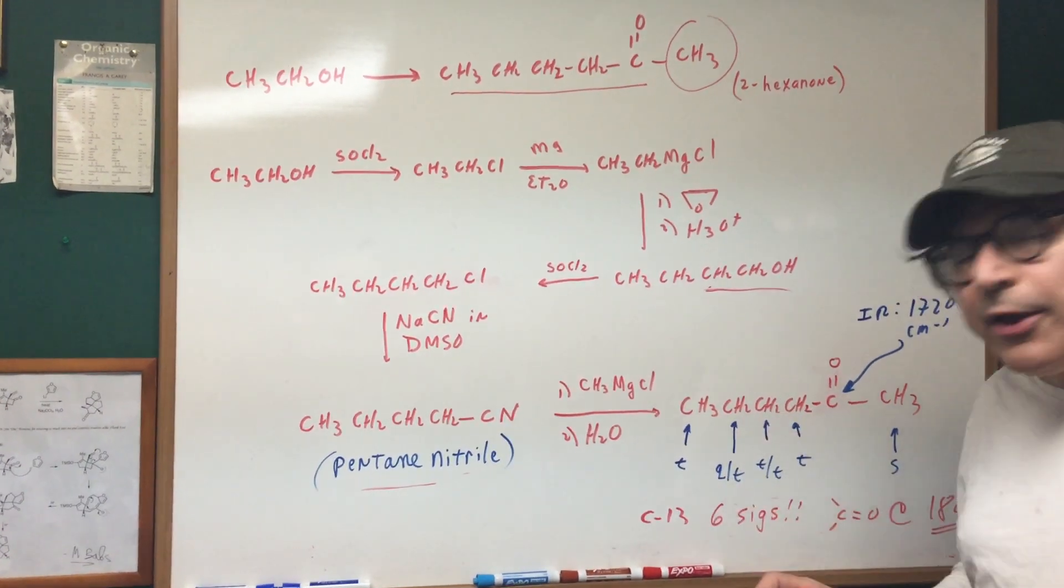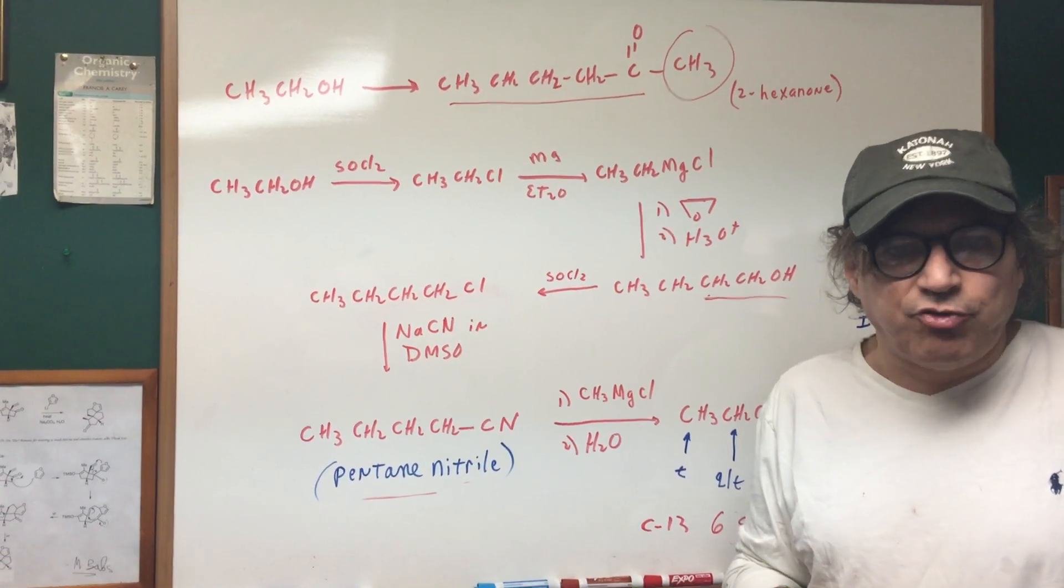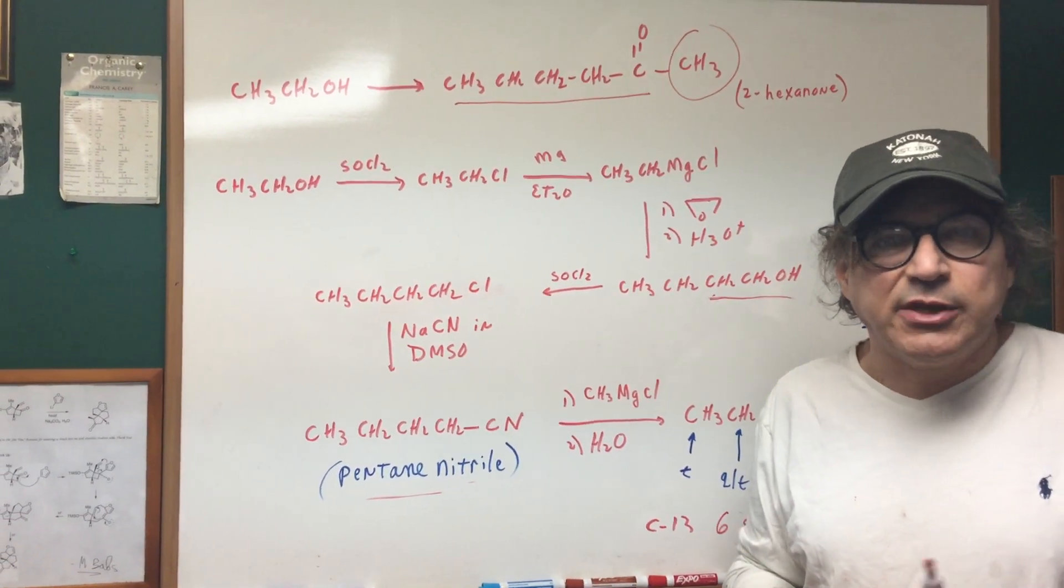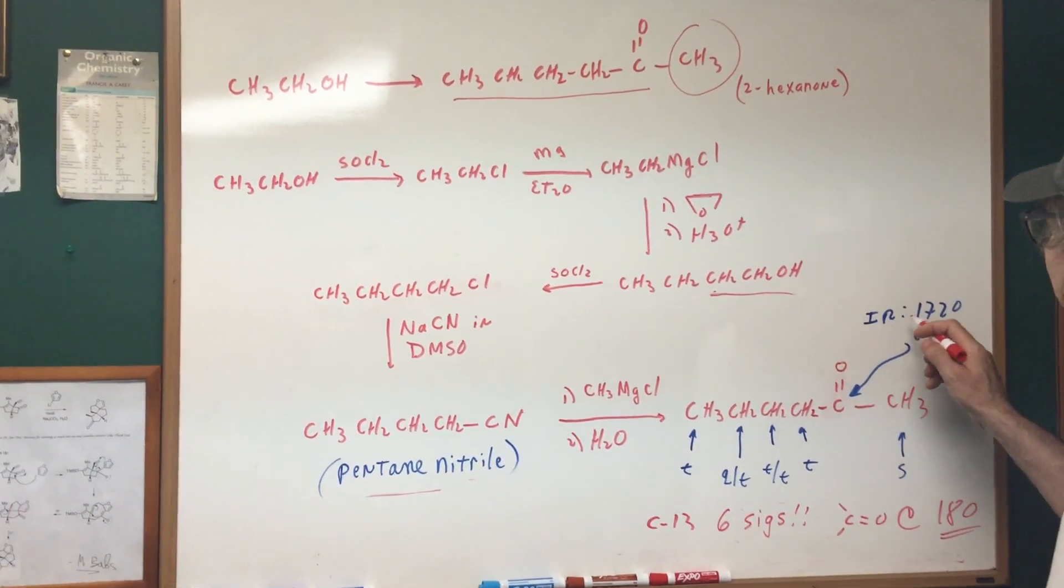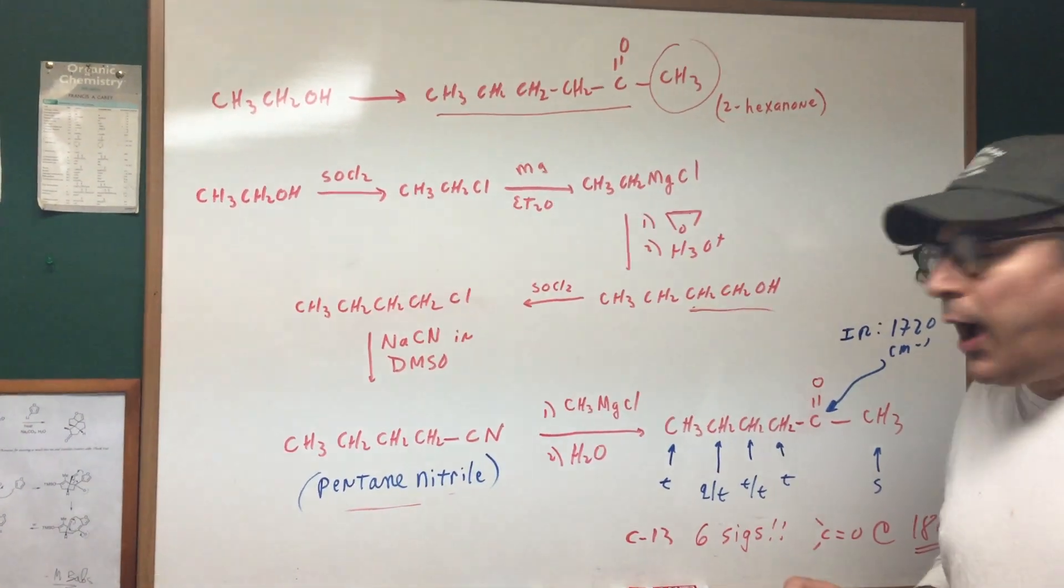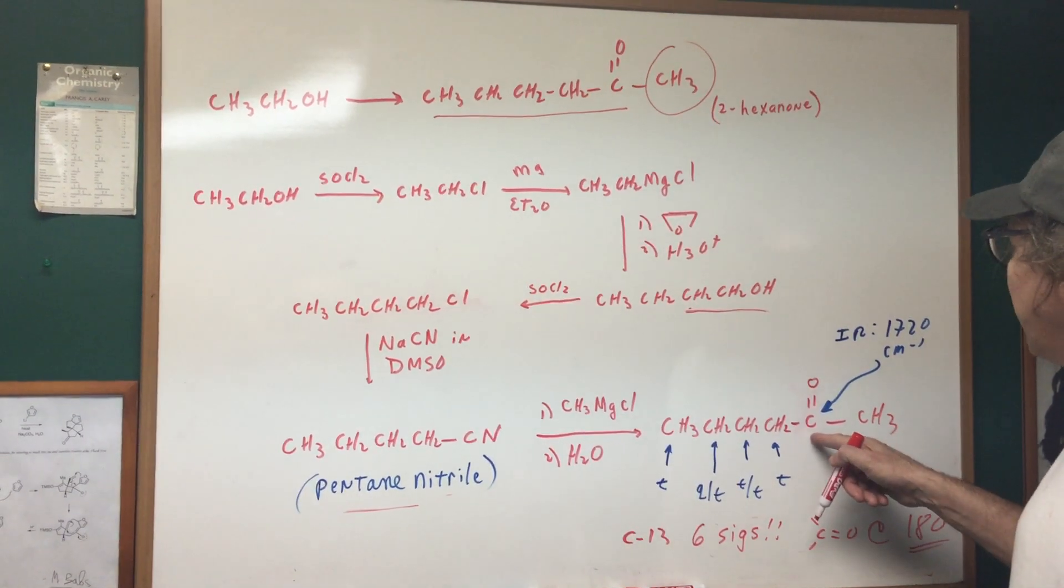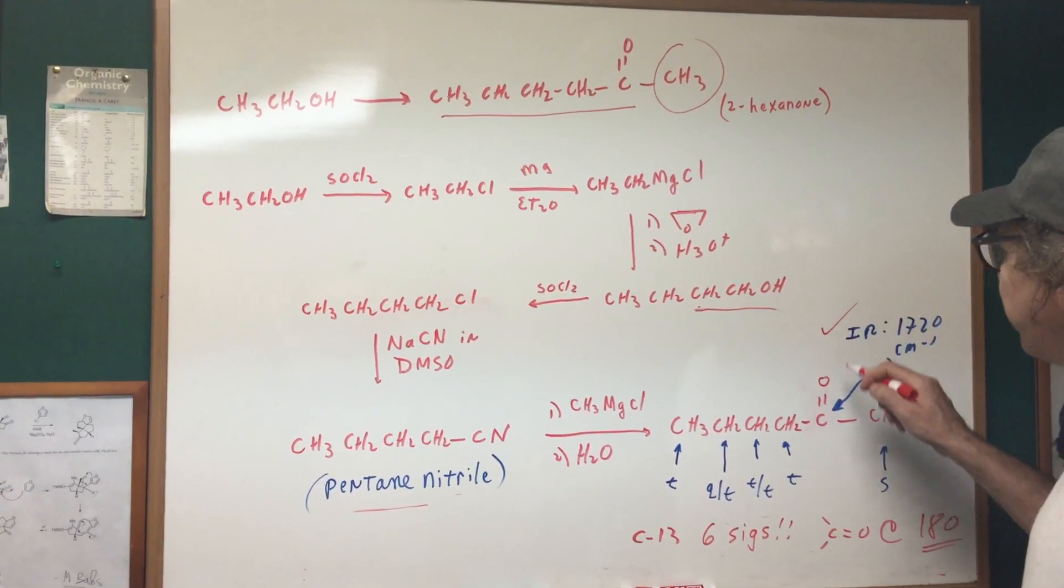Now, if you wanted to confirm that you got a product, I'm going to show you how you would have done it by using spectroscopy. Now, this is going to be very important. First of all, in the IR spectra, I would look for this number, 1720. 1720 is a favorite DAT number. That's going to indicate the signal due to the carbonyl group.